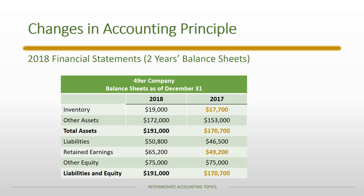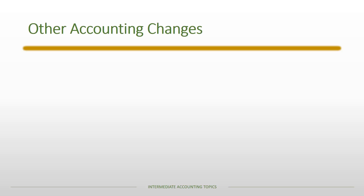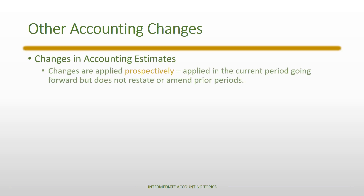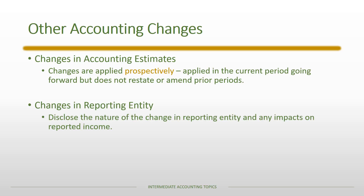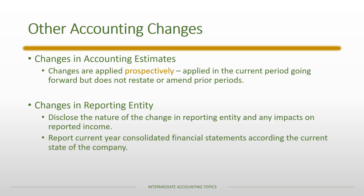For other types of accounting changes: changes in accounting estimates use a prospective approach, meaning we simply apply the new estimate going forward without restating or amending any prior years. For a change in reporting entity, we disclose the nature of the change and any impacts on reported income — since consolidations require accounting for intersubsidiary transactions — and report the current year consolidated financial statements according to the current state of the company.